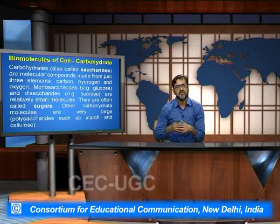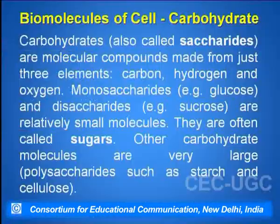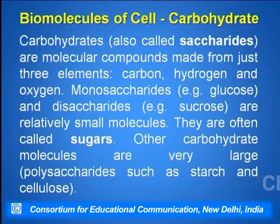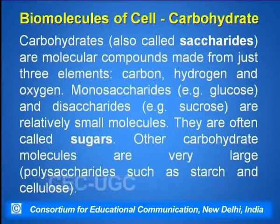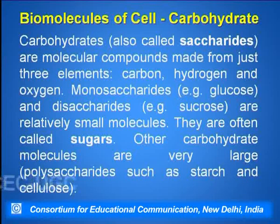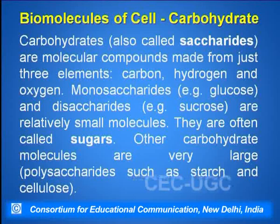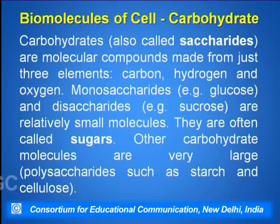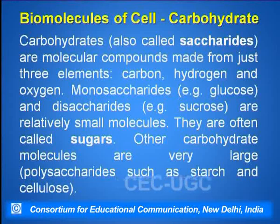The next important biomolecule of the cell are the carbohydrates, many times referred to as the saccharides. These carbohydrates are basically made up of carbon, hydrogen, and oxygen. There can be a monosaccharide, which is only one sugar — for example the glucose molecule — then there can be a disaccharide where two sugar molecules combine with each other with the help of glycosidic bonds, and subsequently trisaccharides and polysaccharides can be formed.